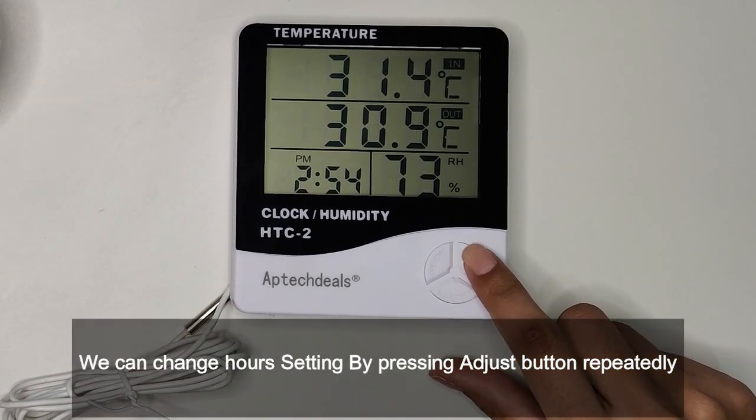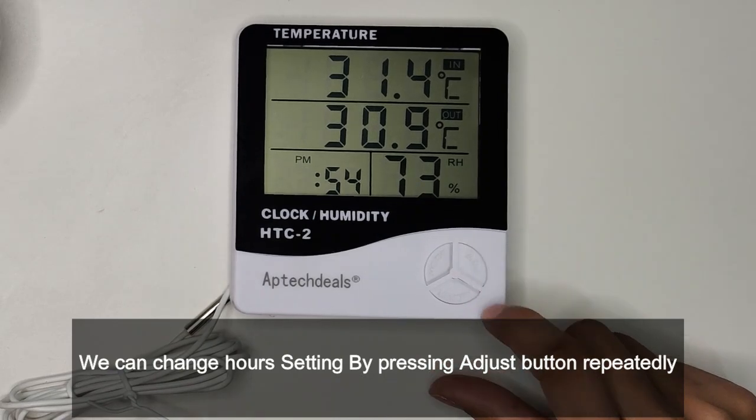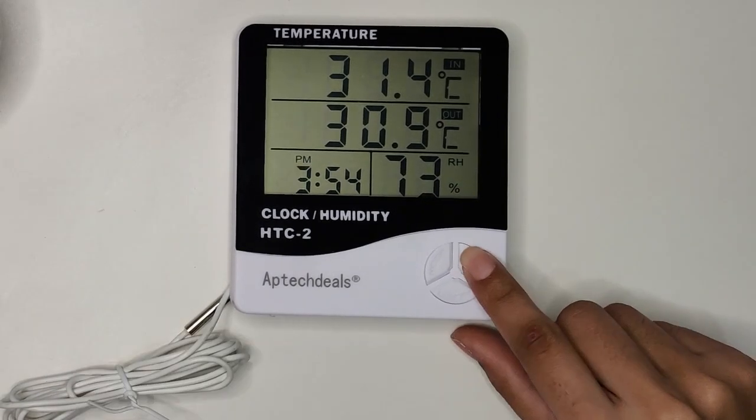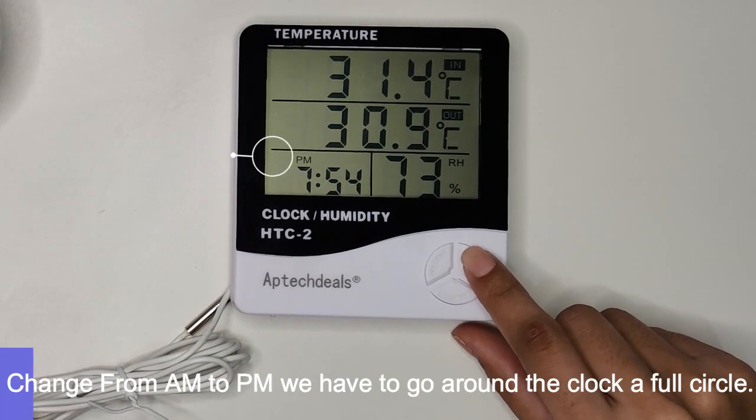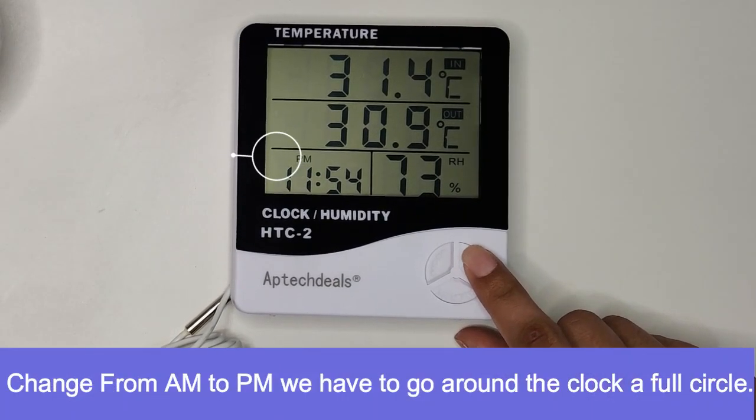We can change the hours setting by pressing the adjust button repeatedly. To change from AM to PM, we have to go around the clock a full circle.